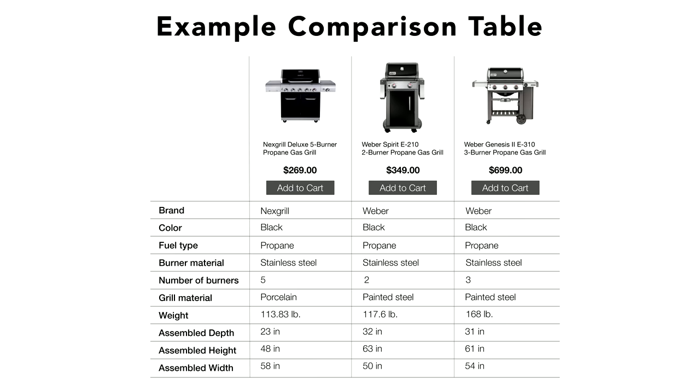Comparison tables aren't just for e-commerce. They can help users compare things like services, membership levels, software features, tuition rates, or locations. A typical comparison table uses columns for the options — for example, the products being compared — with rows for the attributes. Users can look at the attributes that they care about and see how their options compare.